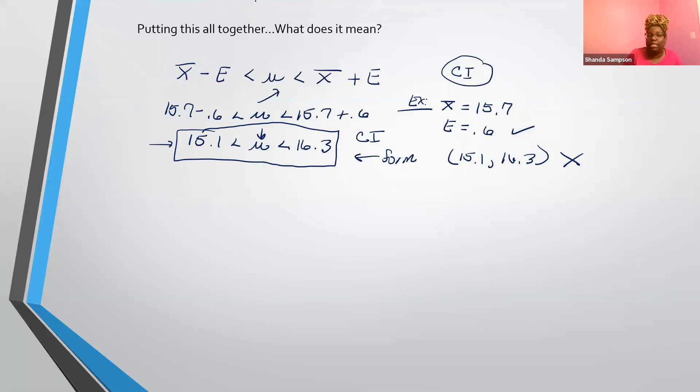So back to what we were saying. Now, if we're given E, then it's an easy problem. But of course, we're not going to be given E. So we need a formula for E. So the formula for E is Z alpha over 2 times sigma over the square root of N. And this is when sigma is known.